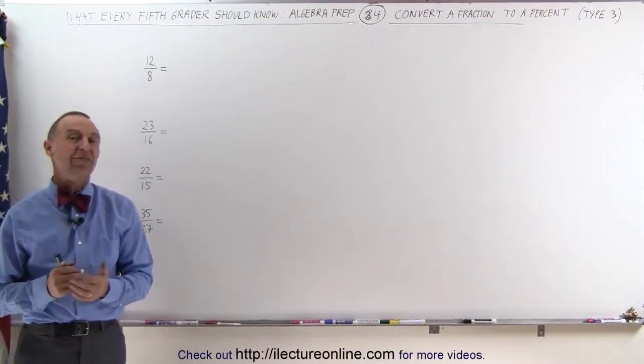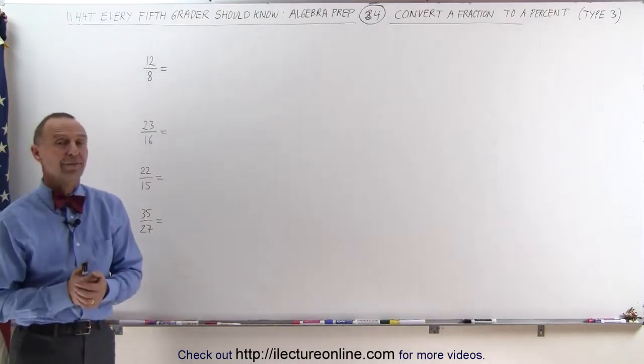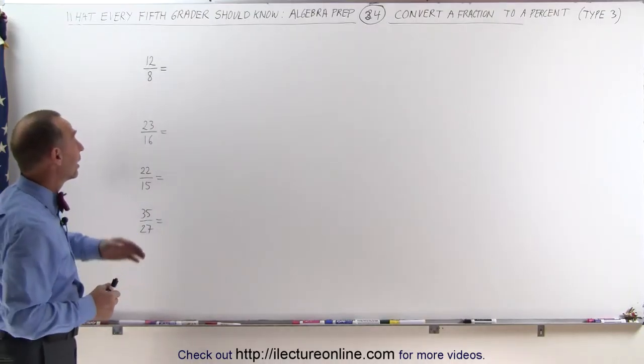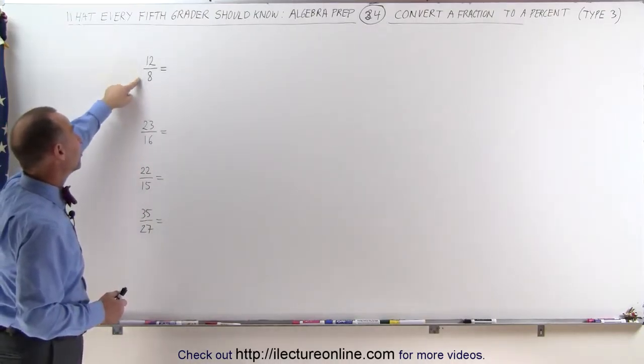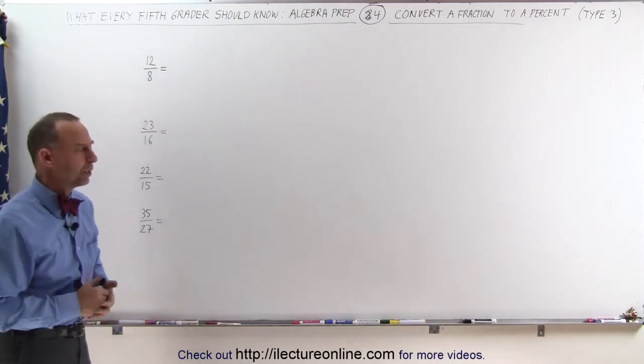Welcome to ElectronLine. Now let's see how to convert an improper fraction into a percent. An improper fraction, of course, is a fraction whose numerator is bigger than the denominator, which means the fraction is bigger than 1.